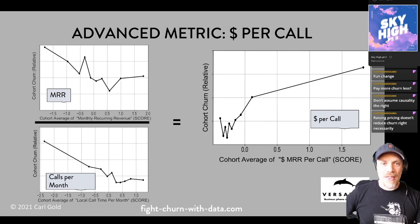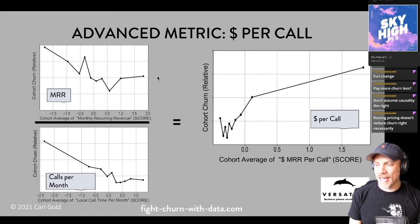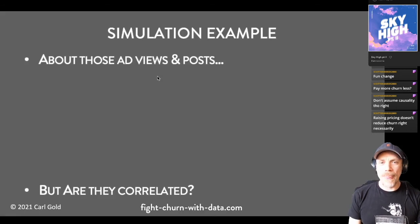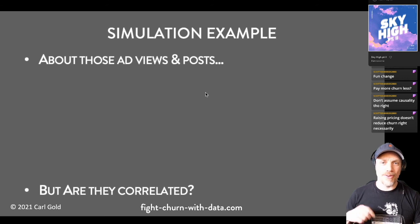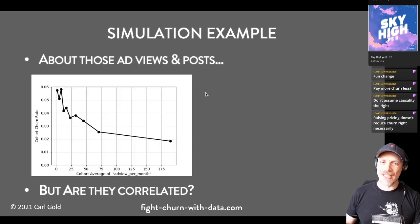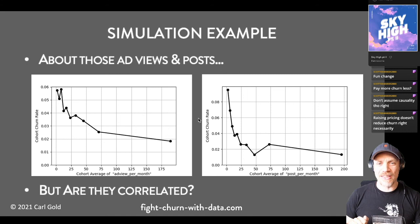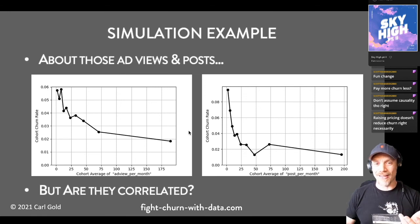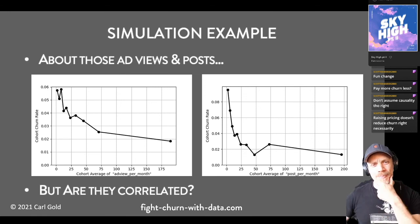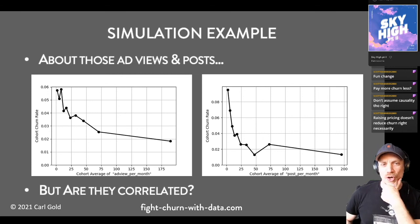This is an example of why you use a ratio metric — because it separates out the correlation and causation for a lot of important use cases in customer data, and it does it in a way that's really easy to interpret. This is the motivating example from the Versature case study. Now here's the motivating example from the simulation case study. Remember, we said ad views — why does that reduce churn? That's kind of weird. This was the churn rate versus ad views from the simulation. Posting really reduces churn too. We wanted to know: are ad views and posts correlated?